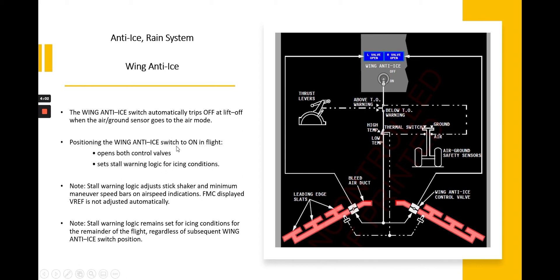Positioning the wind anti-ice switch to on in flight opens both control valves and sets stall warning logic for icing conditions. Stall warning logic adjusts stick shaker and minimum maneuver speed bars on airspeed indications. FMC displayed VREF is not adjusted automatically. Stall warning logic remains set for icing conditions for the remainder of the flight, regardless of subsequent wind anti-ice switch position.